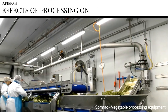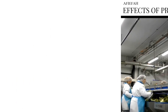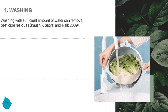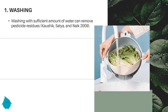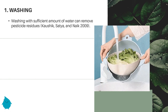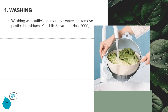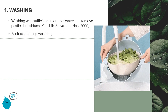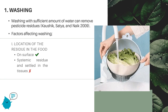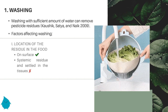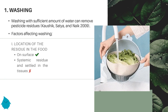Now, discussing the effects of processing on pesticide residue. Firstly, washing — a common practice in most households. A study shows that washing with a sufficient amount of water can remove pesticide residue. Factors affecting washing include: the location of the residue in the food — if the residue is on the surface, washing is effective; however, if there is a systemic residue settled in the tissue, washing is not effective.